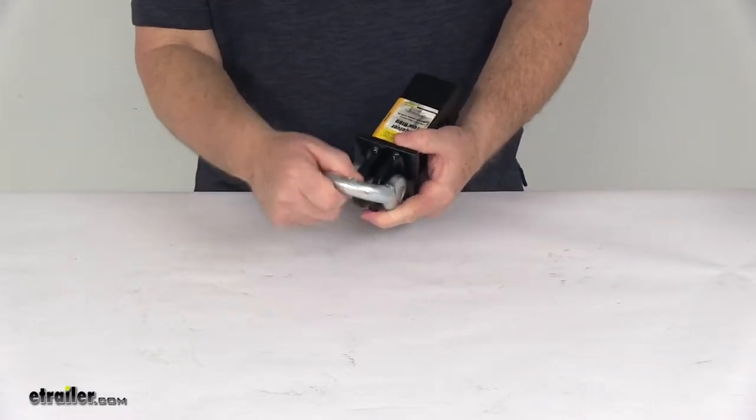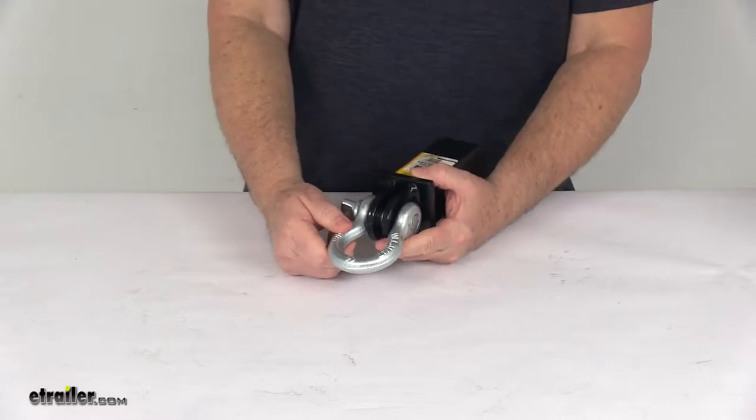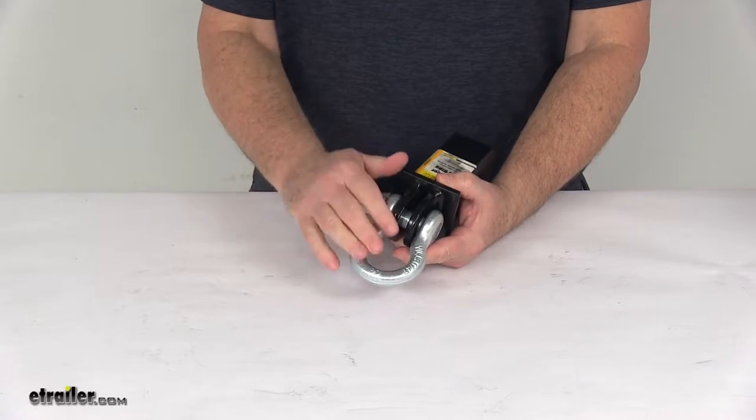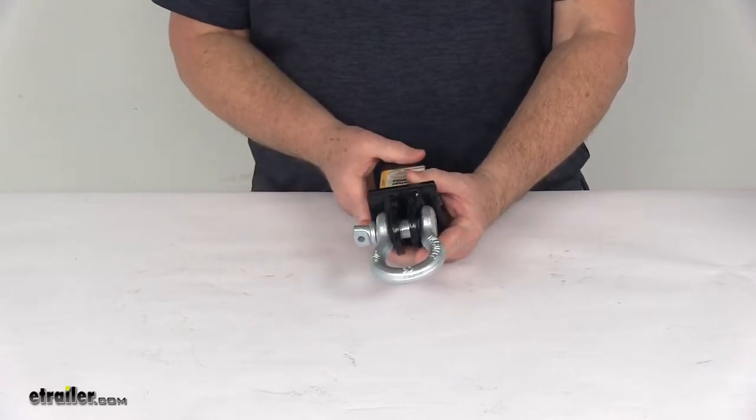Now this tow ring will let you attach a recovery strap, a cable, or a rope to be used in agricultural, industrial, or recreational applications. Now those items we do sell separately on our website.